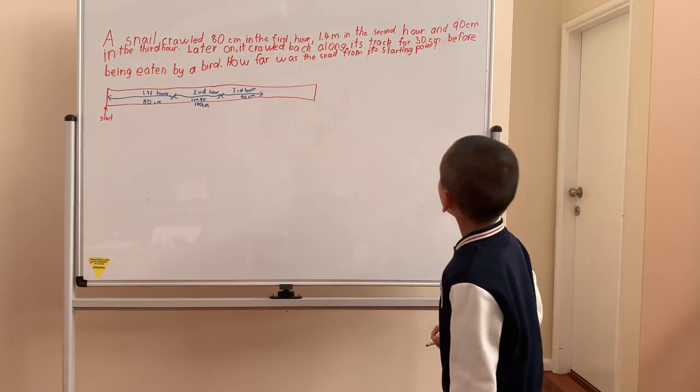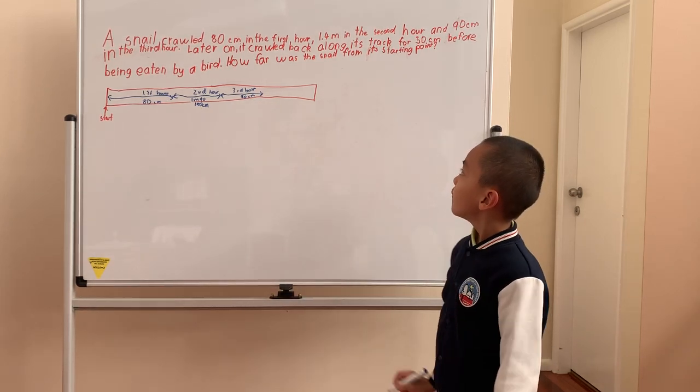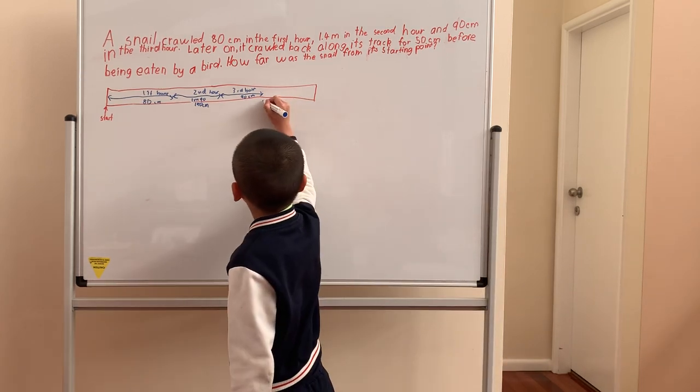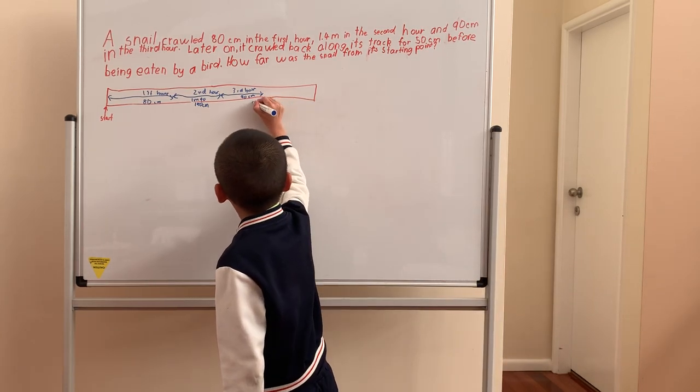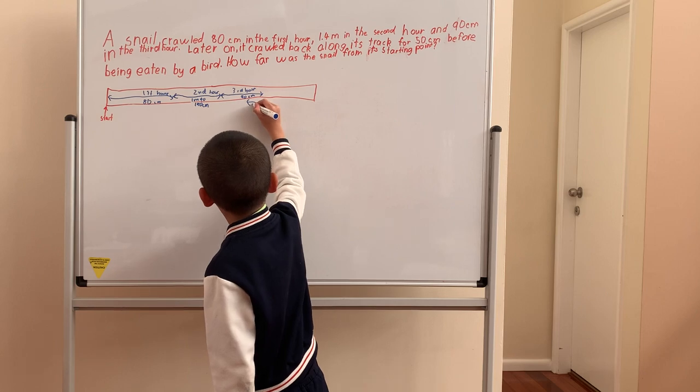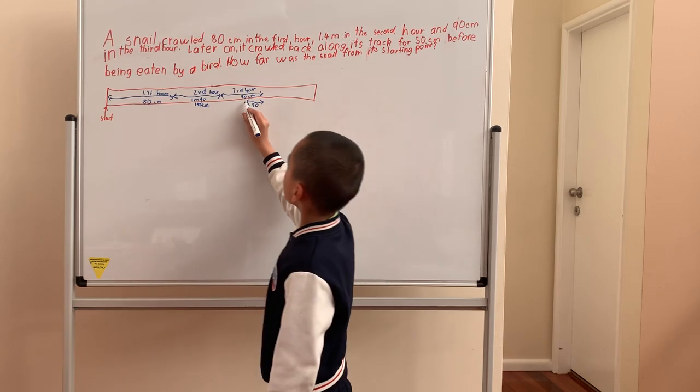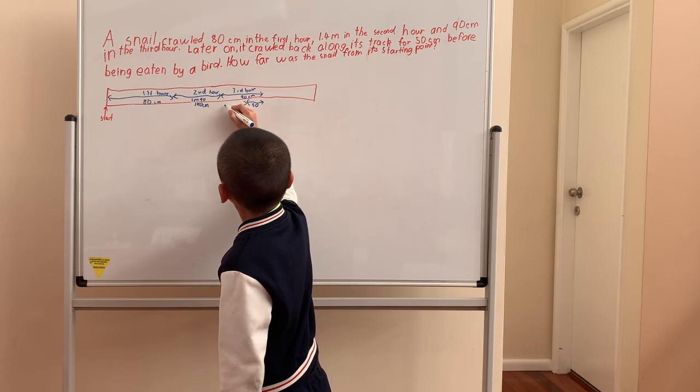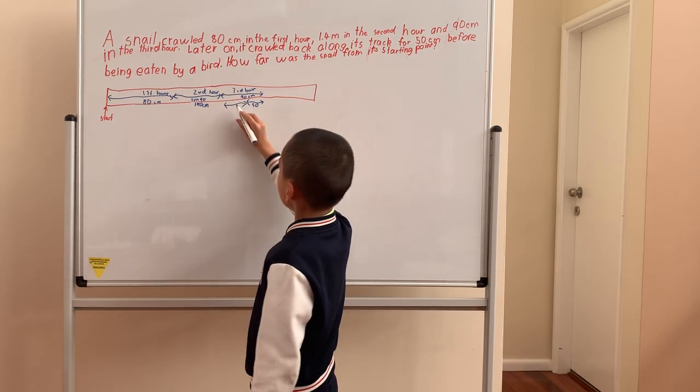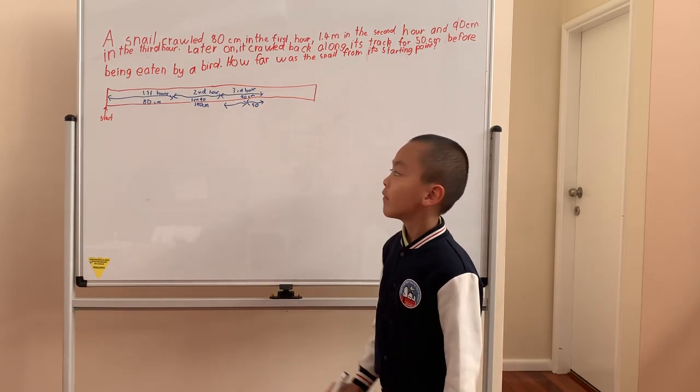And then, it crawled back 50cm. Because it crawled back 50cm over here, what is this? 90 minus 50 is 40.